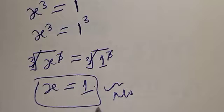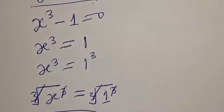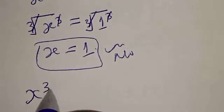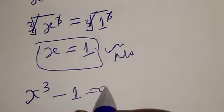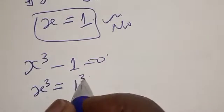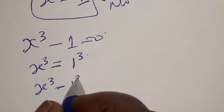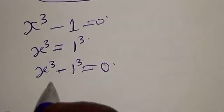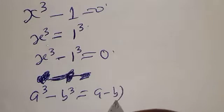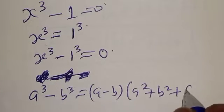Is s equal to 1 the only solution for this problem? No, s equal to 1 is not the only answer. Let's find other values of s. We have s³ minus 1 equal to 0, which means s³ minus 1³ equals 0. Using the difference of cubes identity: a³ minus b³ equals (a minus b)(a² plus ab plus b²).